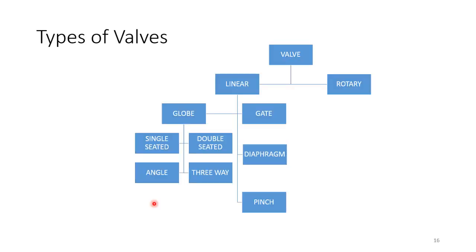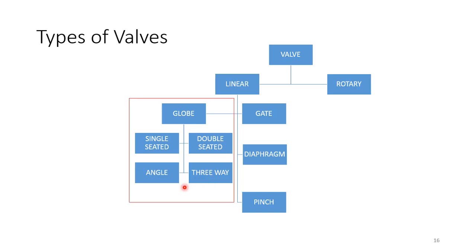Types of valves: valves can be linear or rotary — rotary are also used for controlling. Focusing on linear types: gate, diaphragm, and pinch types are not used for control applications. Globe valve — single seated, double seated, angle, and three-way — these are the valves used for controlling, and they will be the focus of further discussions.